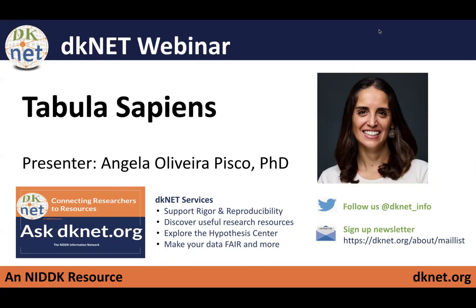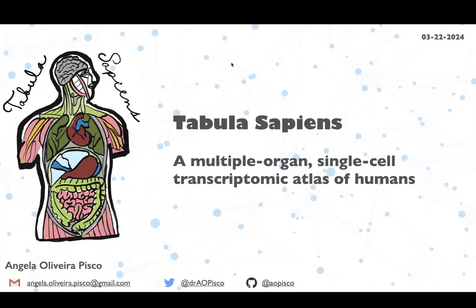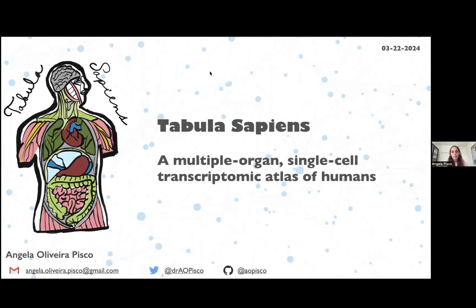Good morning everyone, thank you for being here and thanks to the organizers for inviting me to speak at the webinar. Today I'm going to be talking to you about Tabula Sapiens, which is one of the very first multiple organ, multiple donor references that makes the first draft of the Human Cell Atlas.